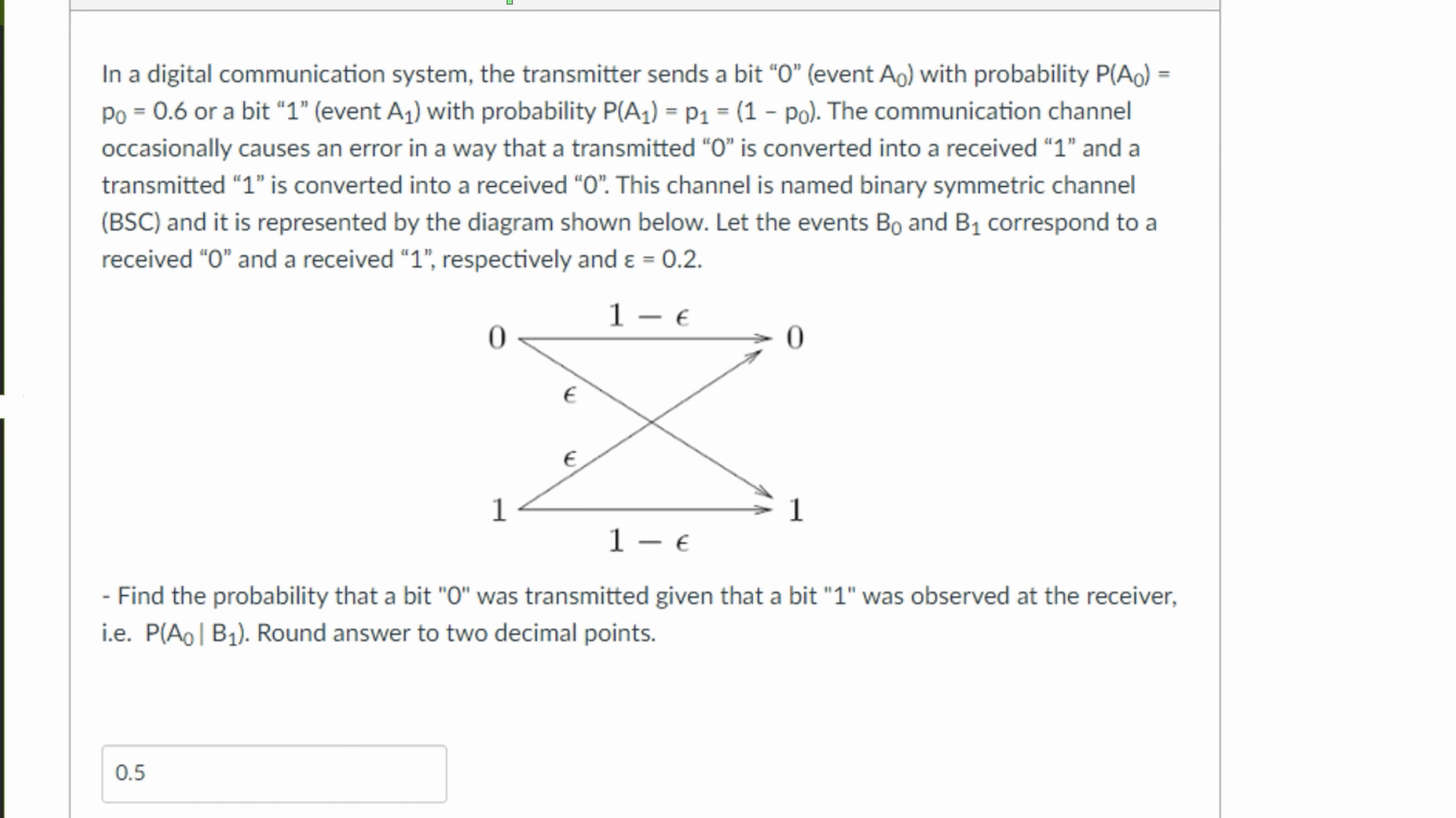In a digital communication system, the transmitter sends a bit 0, event A0. So 0 is going to be A0 with the probability of A0 being 0.6. That means whenever we send A0, the probability of this 0 being sent is 0.6.